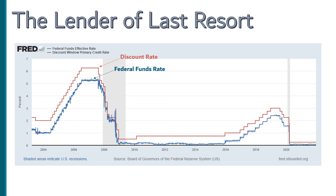The financial system was no longer dependent on the discretion of banking giants like JP Morgan. Now it had this government-backed super bank that could always rescue it in times of need.